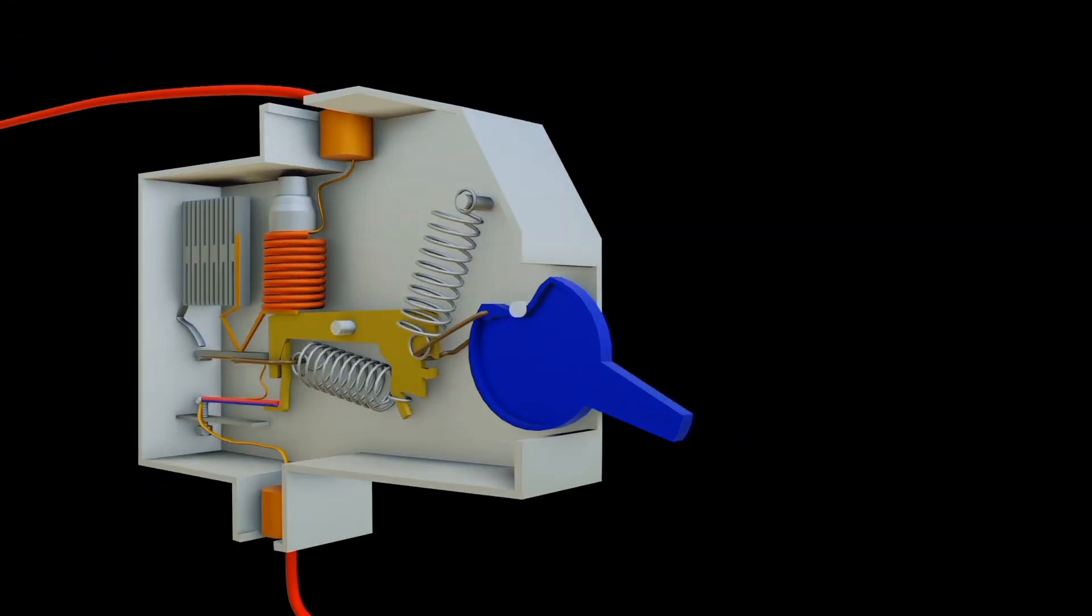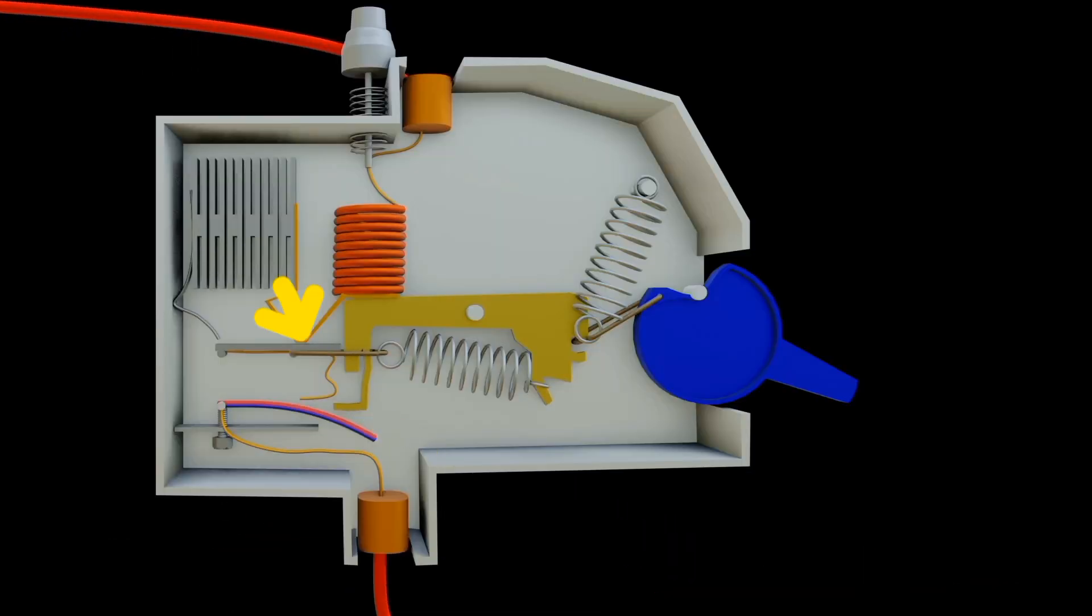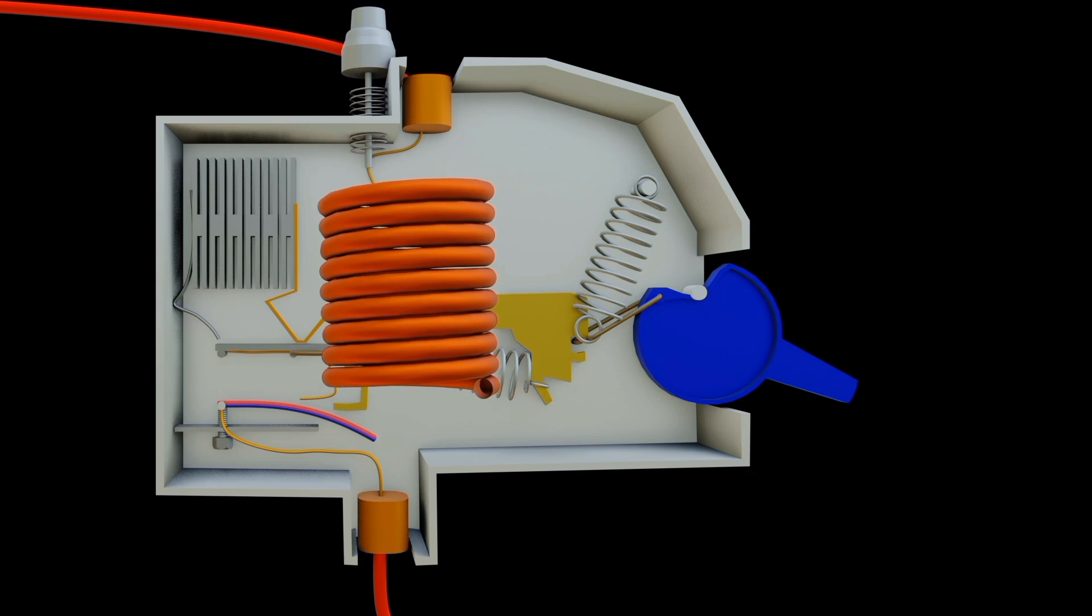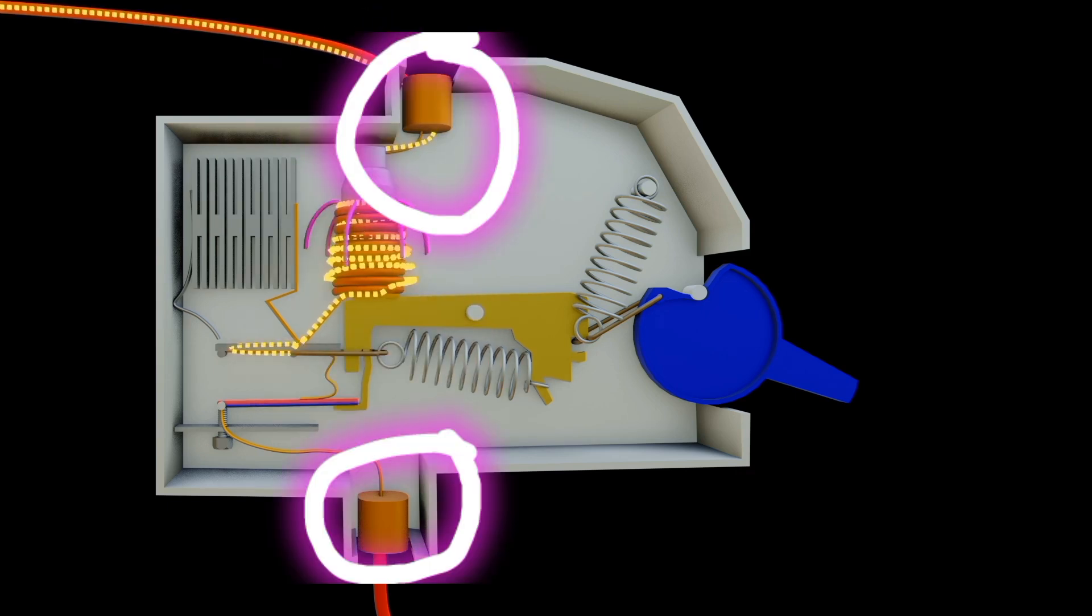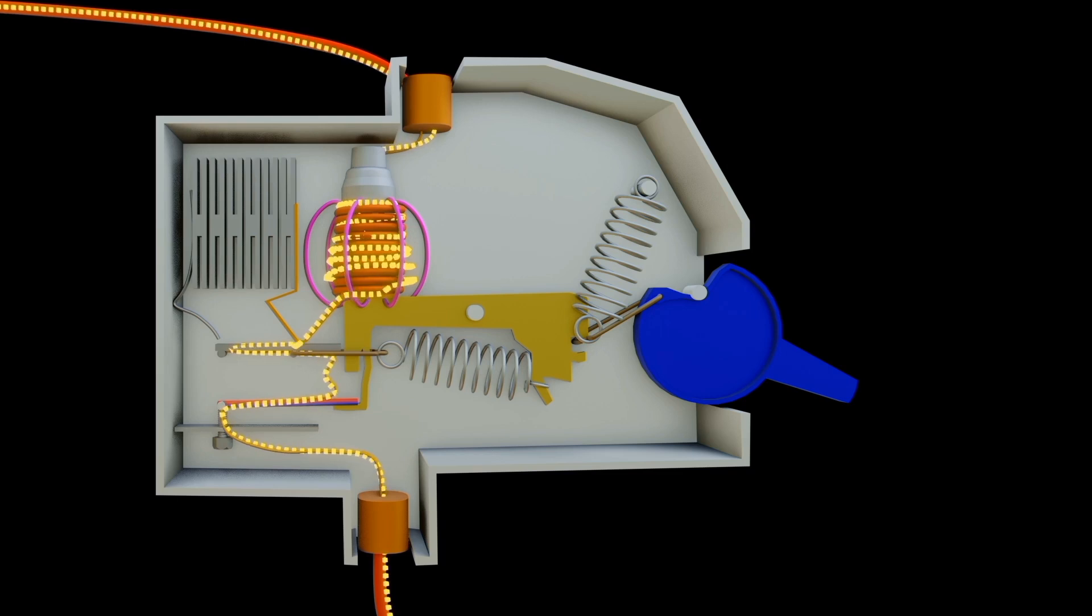Inside the circuit breaker we have moving contact, fixed contact, magnetic coil, and this magnetic coil has a small metal cylinder with a pin. Also a small spring is put inside it. Also power terminals are connected with wires.